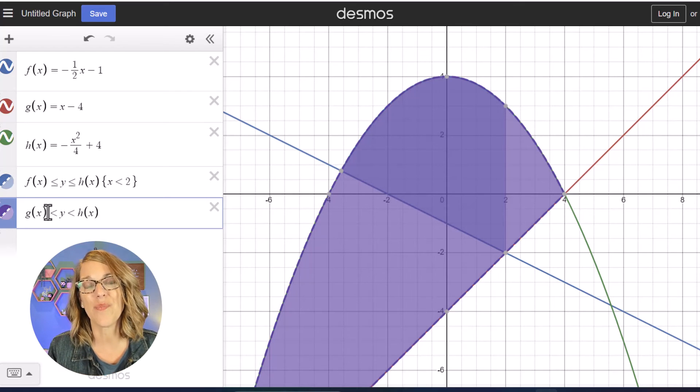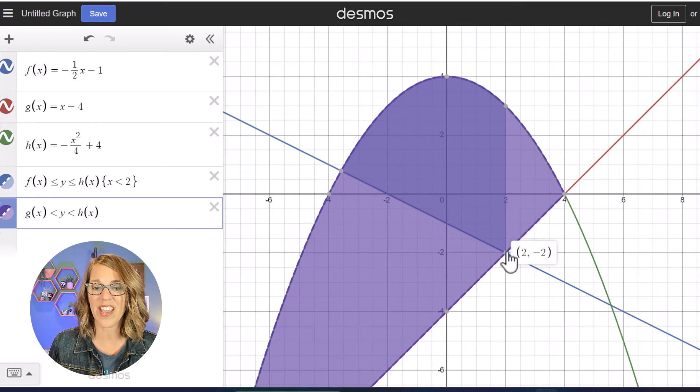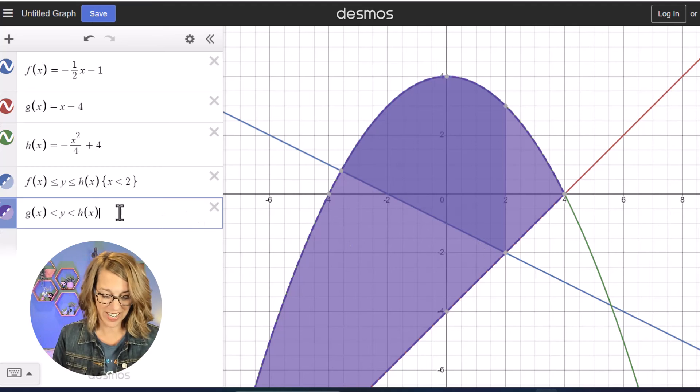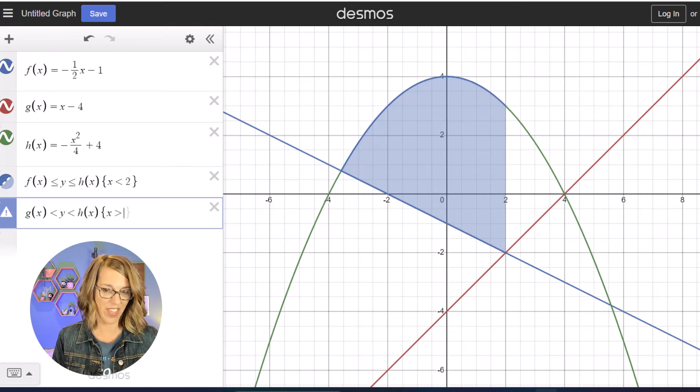And it gives me way too much. Well this time I just want the area that's to the right of 2. So I'm gonna put in some domain restrictions here by doing a curly bracket and this time I want X greater than 2.